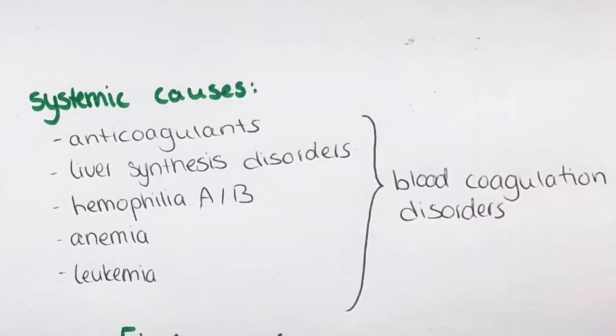The systemic causes can be for example blood coagulation disorders, like therapy with anticoagulants, liver synthesis disorders, hemophilia A and B, anemia, leukemia, and many others also.